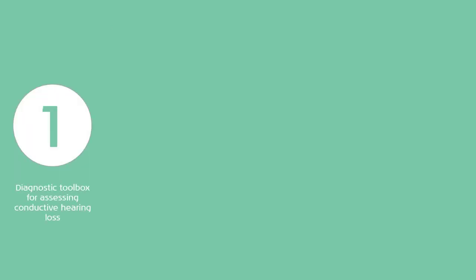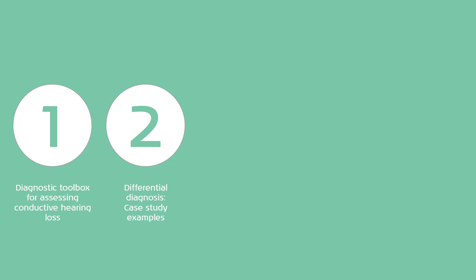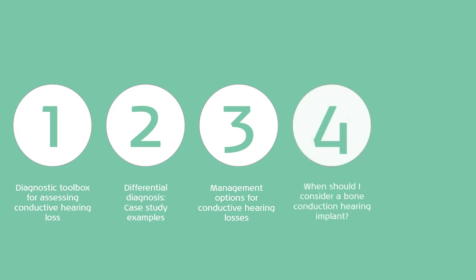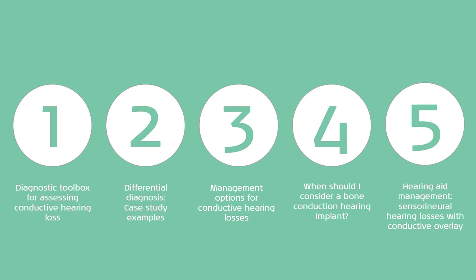In this session, we will start by exploring the diagnostic toolbox and the tests that are available and useful when assessing conductive hearing losses. We will then turn our attention to some case study examples to look at how to utilise these tests for the diagnostic process. Then we will consider the different management options available for conductive and mixed hearing losses, and we will hear from a bone conduction hearing implant specialist about these implantable devices. Finally, we will hear from a long-term hearing aid user with a conductive hearing loss, and explore how best to manage patients with mixed hearing losses who have acoustic hearing aids.